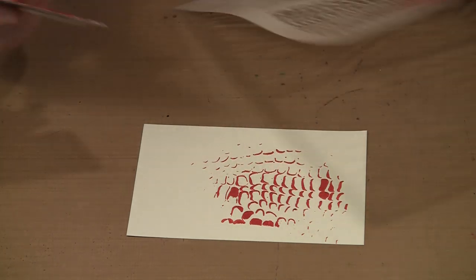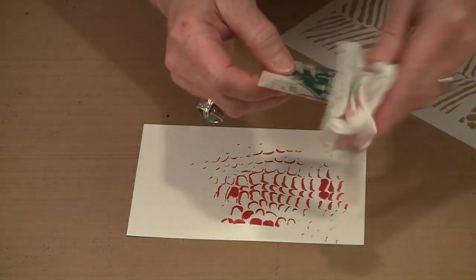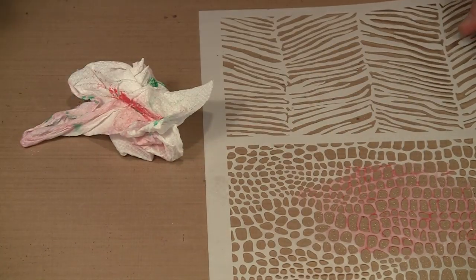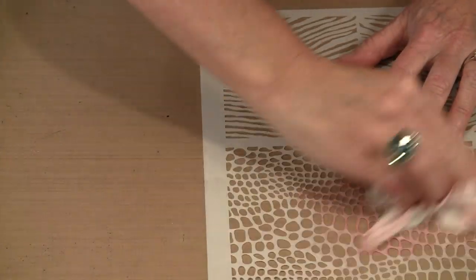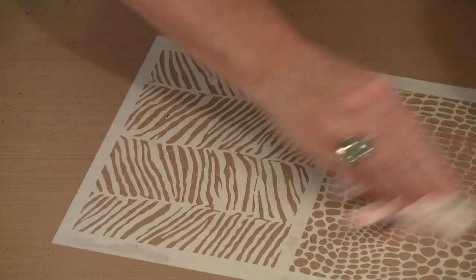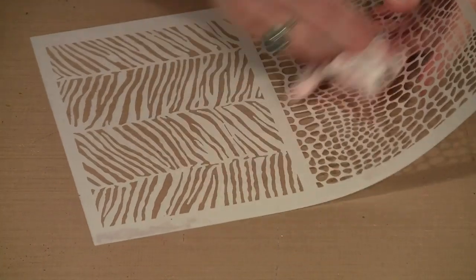You can get full coverage if you want to stand there and really scrape a lot of the product over. Or you can get this really kind of fun, indistinct look. Now, because liquid pearls are going to be permanent, you do want to clean your stencil off. Just give this a spritz of water. Go ahead and rub the product off. For the sake of brevity, I just want to move on to the final thing.